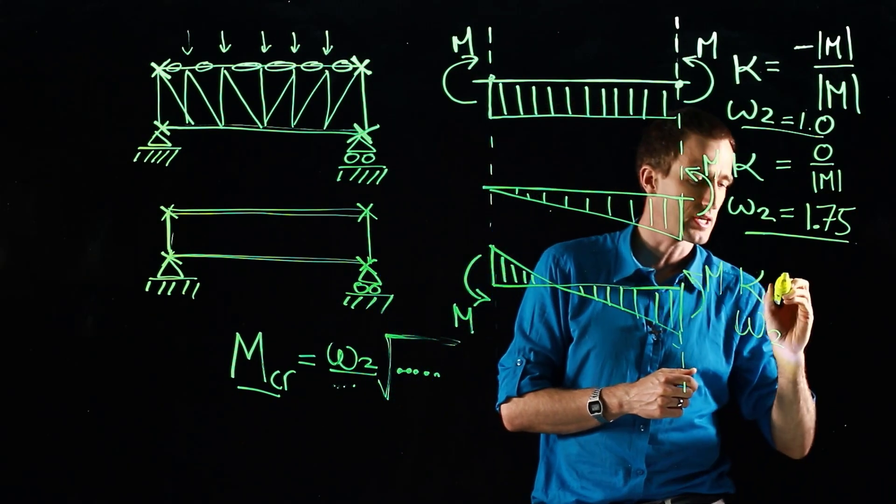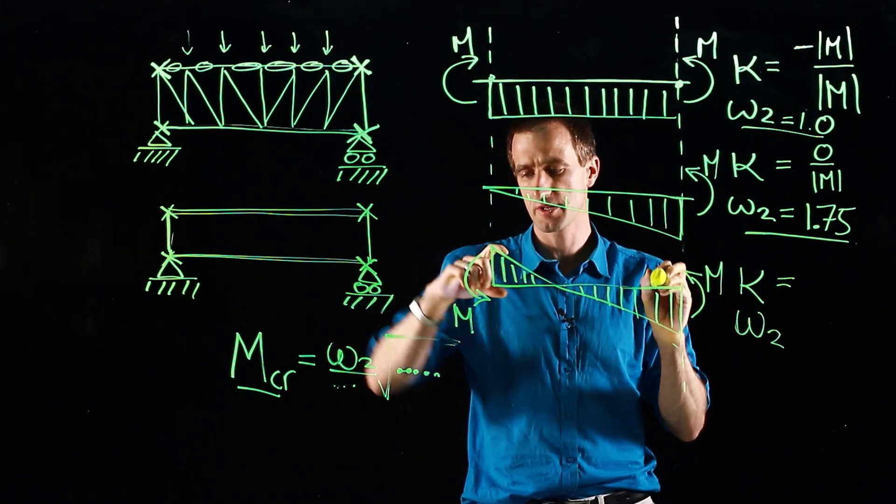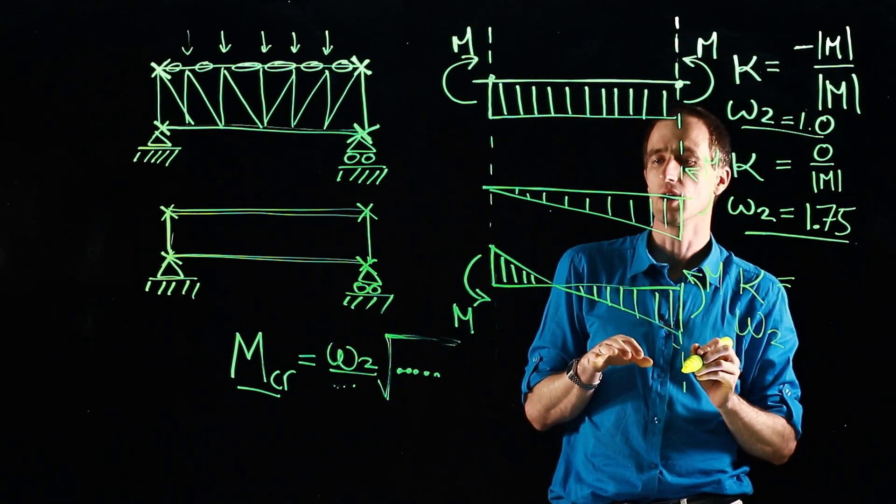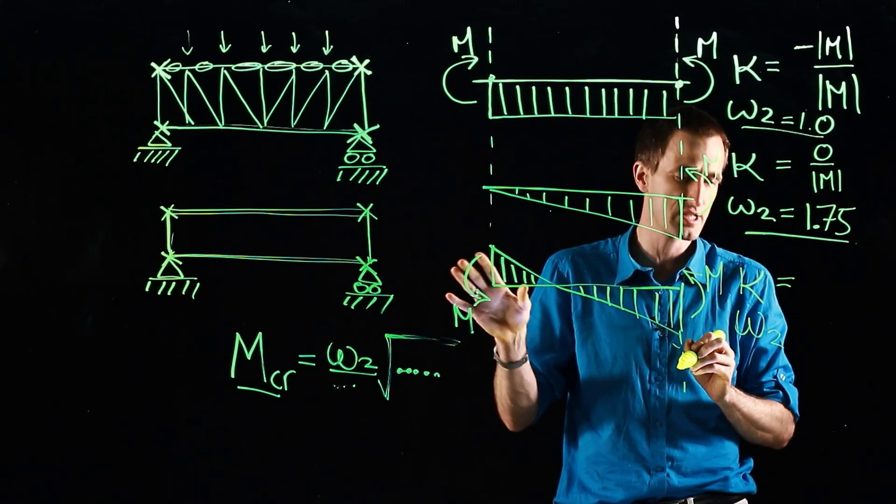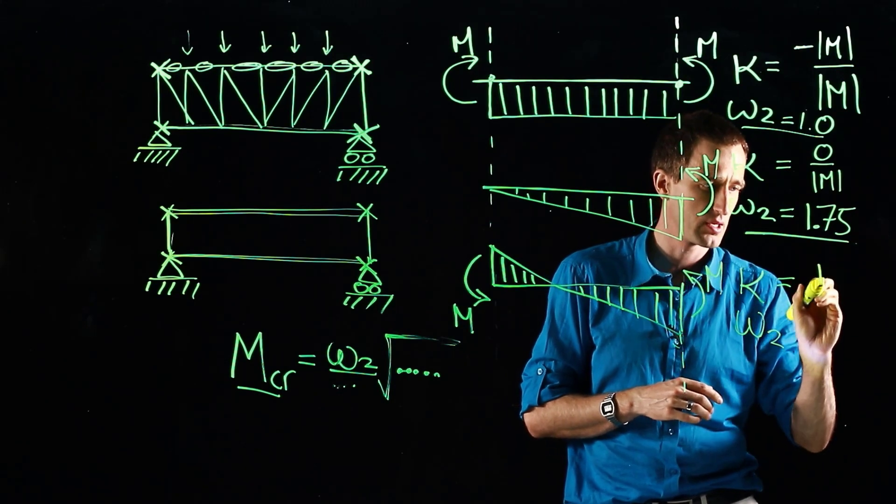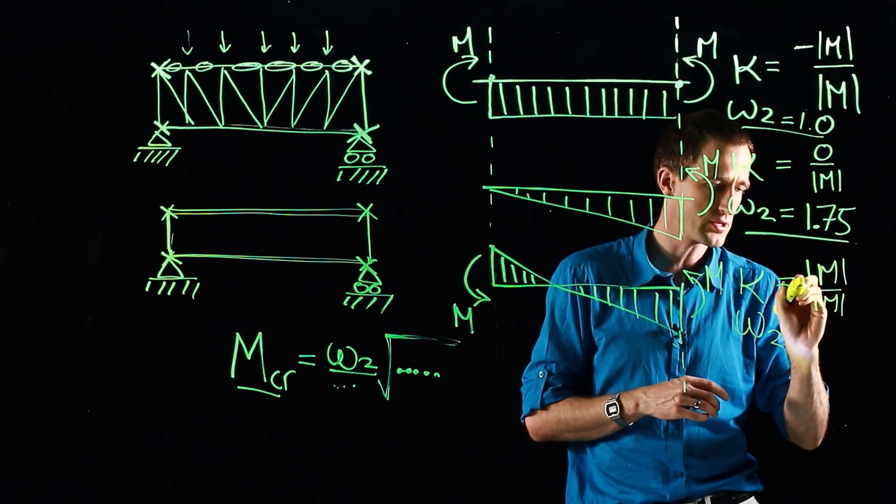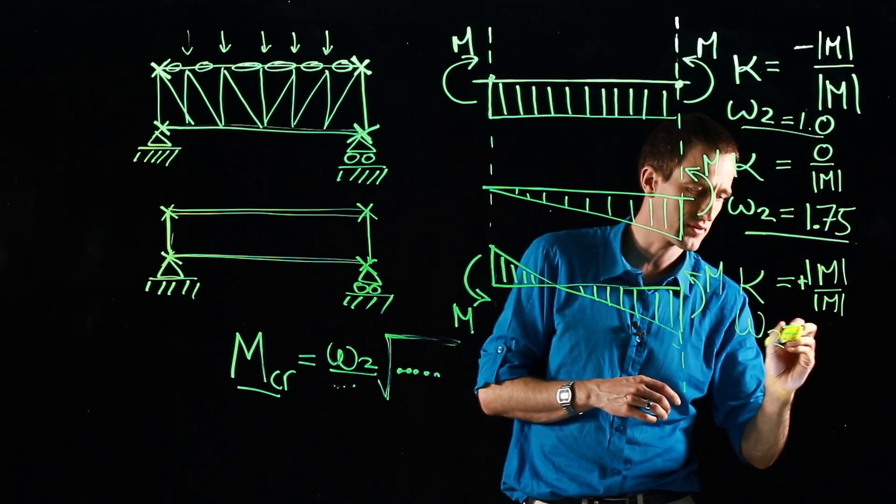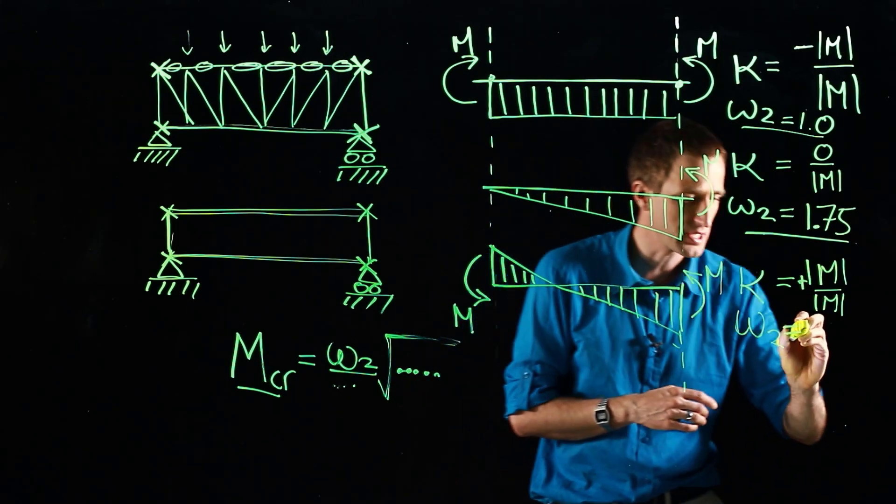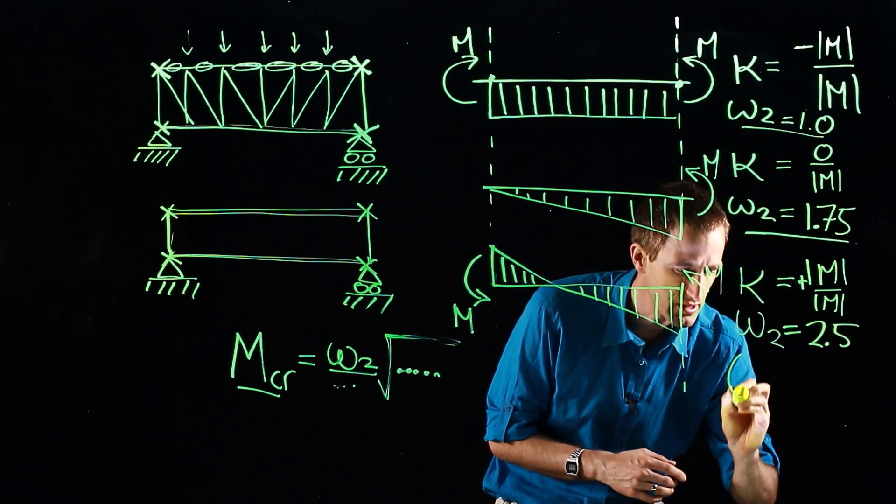Now we get to the final one where it's double curvature. So a moment on one side and then opposite on the other side. So we have compression on the one side and tension on the other. And tension stabilizes. So here we end up then with magnitude of moment over moment. But then it's positive for double curvature. And here we end up when we calculate this we get to an omega value of 2.5 and this is limited.